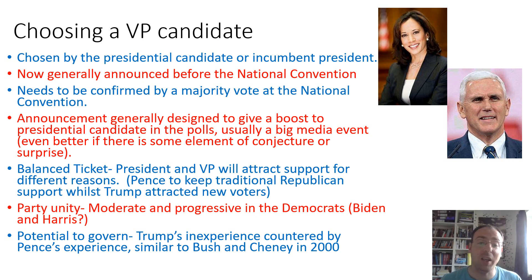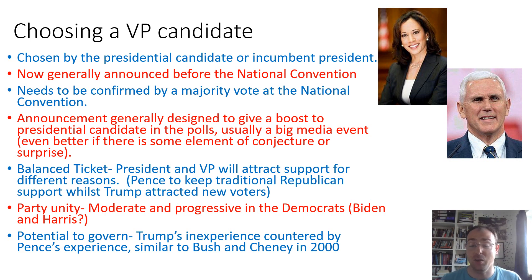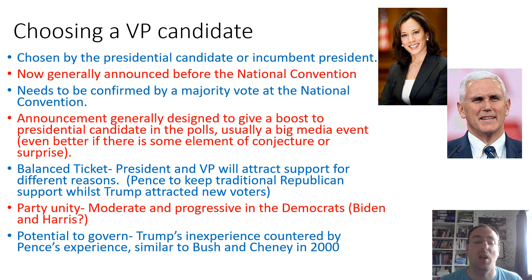Sometimes presidential candidates are looking for a balanced ticket, so a president and vice president will attract support for different reasons. You can see this with Trump and Pence, where Pence kept traditional Republicans on board whilst Trump was out trying to attract new voters or people who hadn't previously been voting for the Republican Party. It can be about party unity — so the Biden-Harris ticket could be seen as a chance to reconnect the progressives and the moderates together. It can also be about potential to govern, so Trump's complete political inexperience would be countered by Pence's many years of experience — similar to the case with George W. Bush and Dick Cheney in 2000.